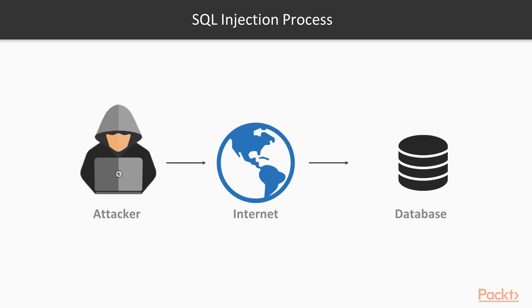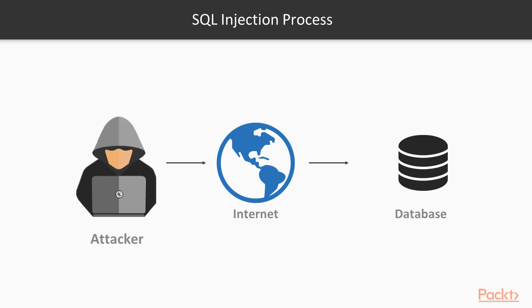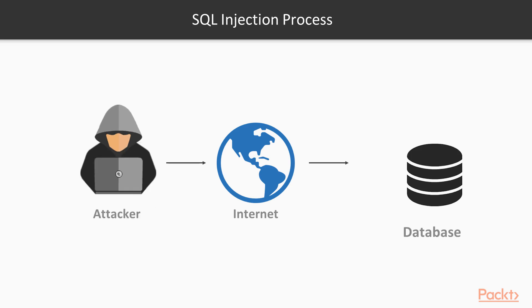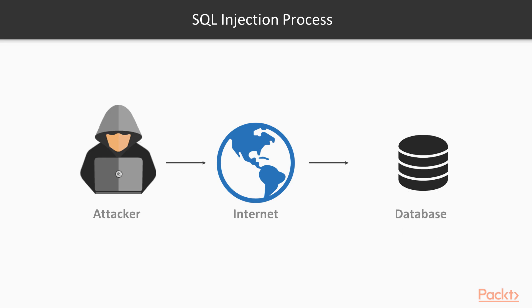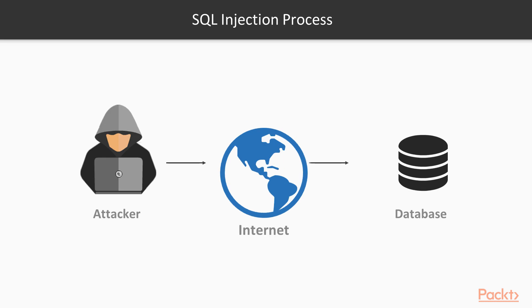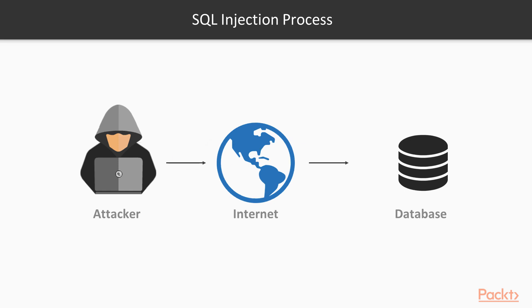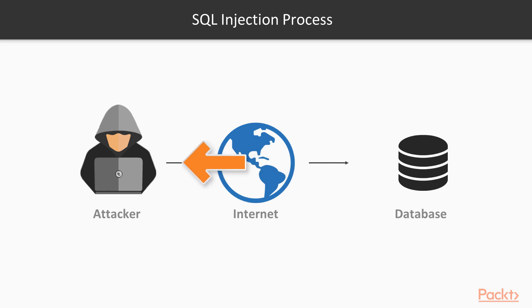The SQL injection process is quite simple. In this scenario, you can see the attacker and the database or web server. An attacker tries to attack the web server using the internet to access it. The attacker needs to insert SQL commands, and the database will provide all the information back to the attacker's browser. This is the SQL injection process.